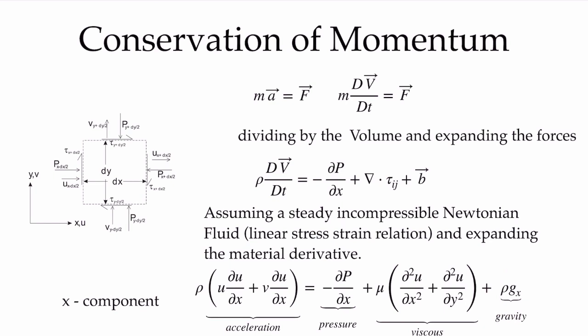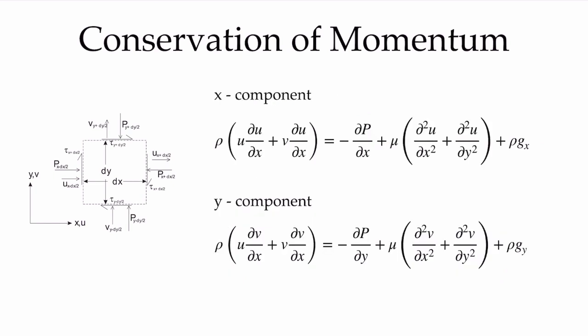It wasn't so hard to go from F equals ma to our Navier-Stokes equations. That's a vector equation, so we look at the x component — where we put u into all the differentials, with the pressure gradient dp/dx and the x component of the gravity vector — and the y component, where we put v into each term, take derivatives with respect to y, and include the y component of the body force.